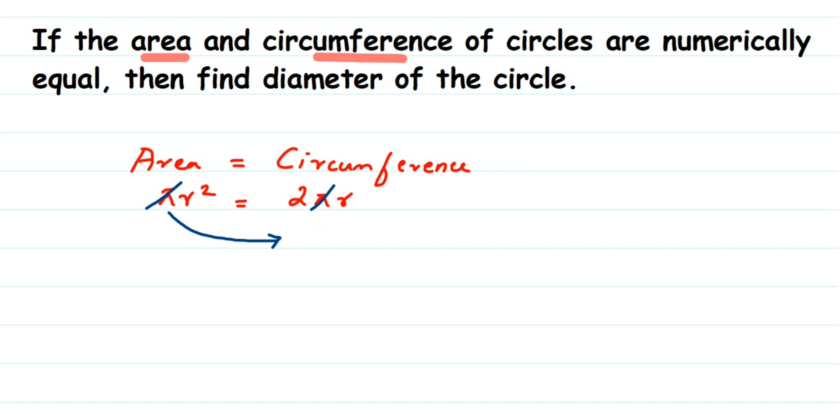Then next, what we got here is r² equals 2r. Again, you can transpose this r to the other side of the equation and you can cancel it, or you can cancel in the same step.